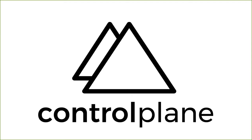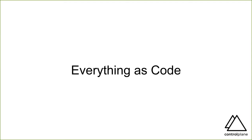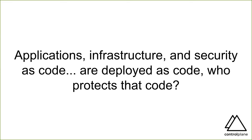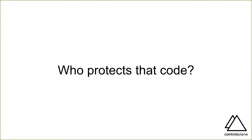Everything has become or is rapidly becoming defined as code. When we include expensive things like infrastructure, dangerous things like policy and compliance, access to our data stores, and personally identifying information of people who trust us, we have to consider the security of the system. Who is protecting the code? At the moment, by default, there is not very much protection on Git — on hosted code repositories in general — and there isn't much trust. We'll talk about how to fix that.